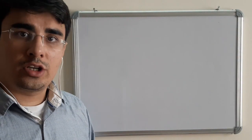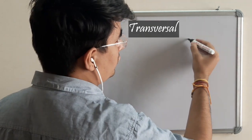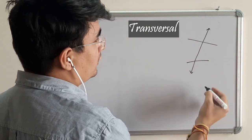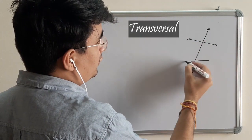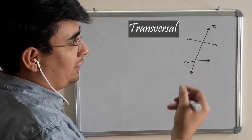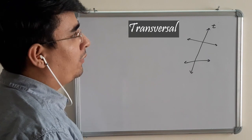Next comes the concept of transversal. So transversal is a line, suppose there are two lines and a single line is intersecting both the lines. So this particular line is known as transversal. We normally represent it by an italic letter. It can be T or L or N, M, any.